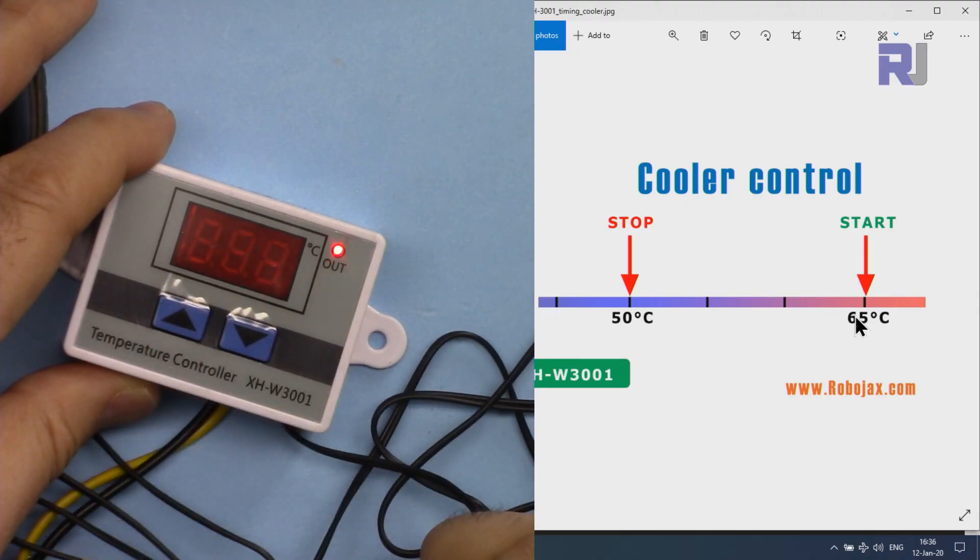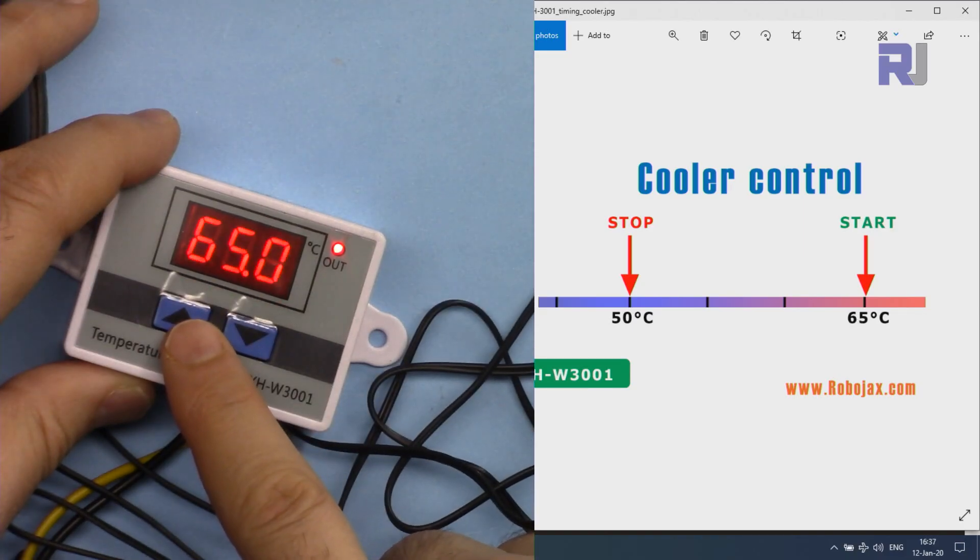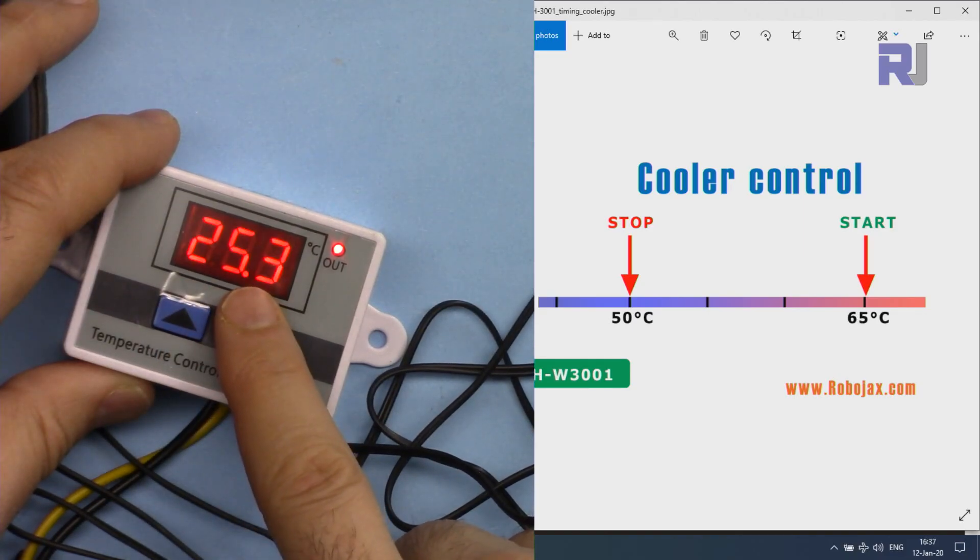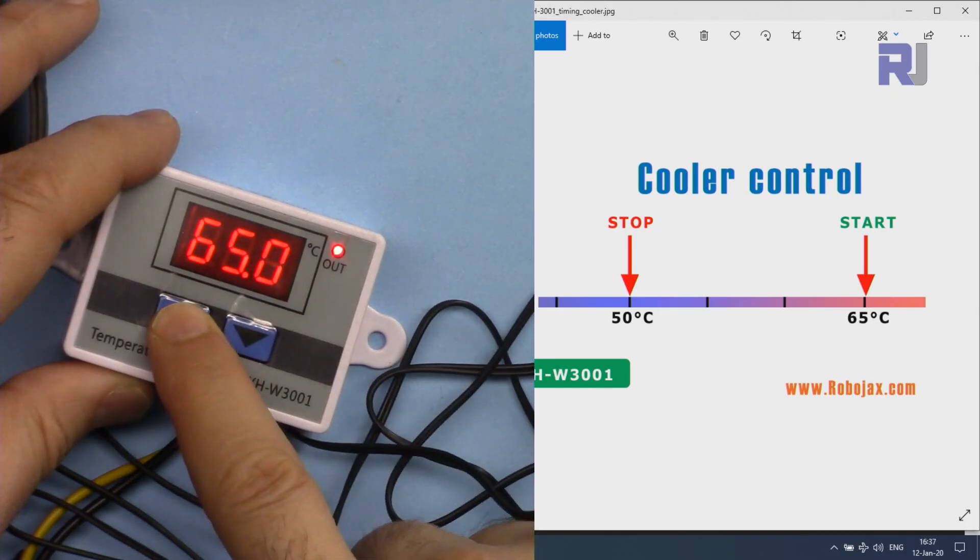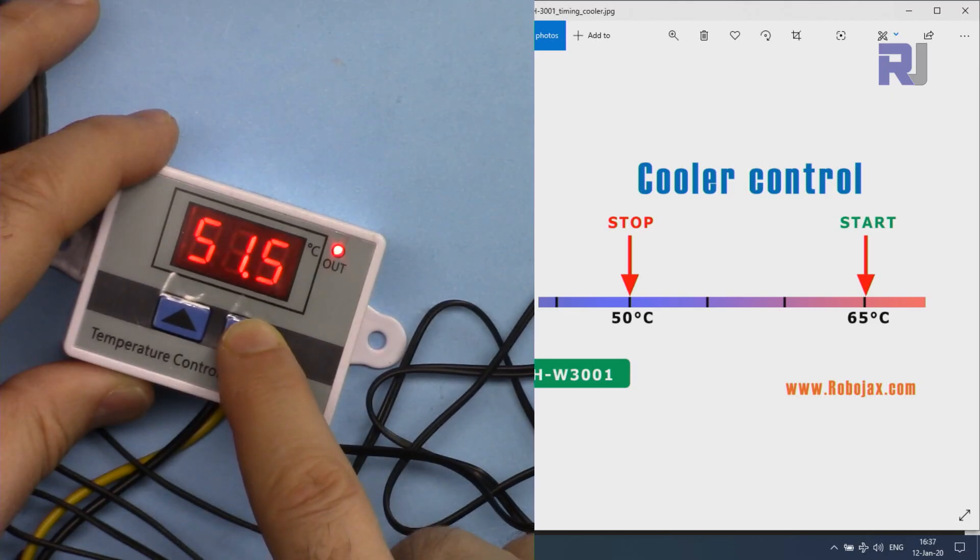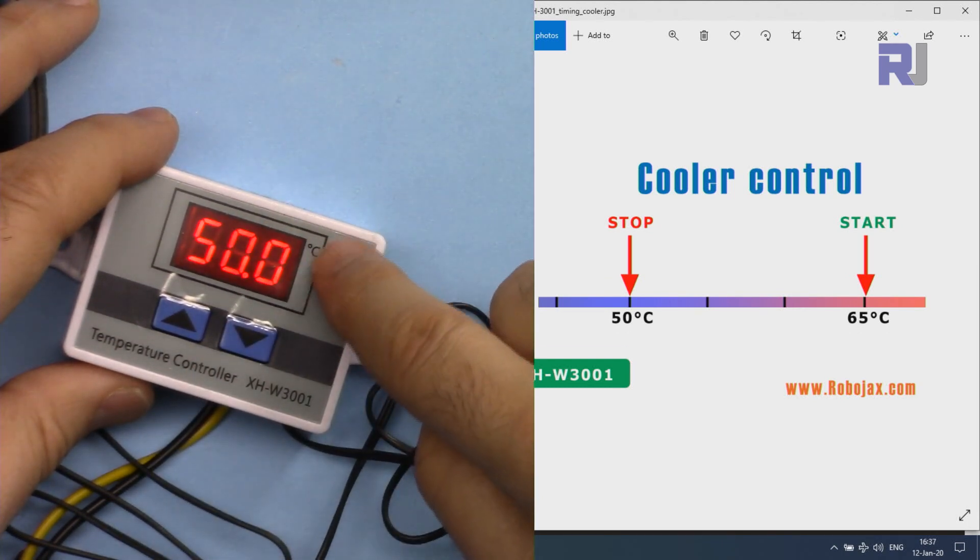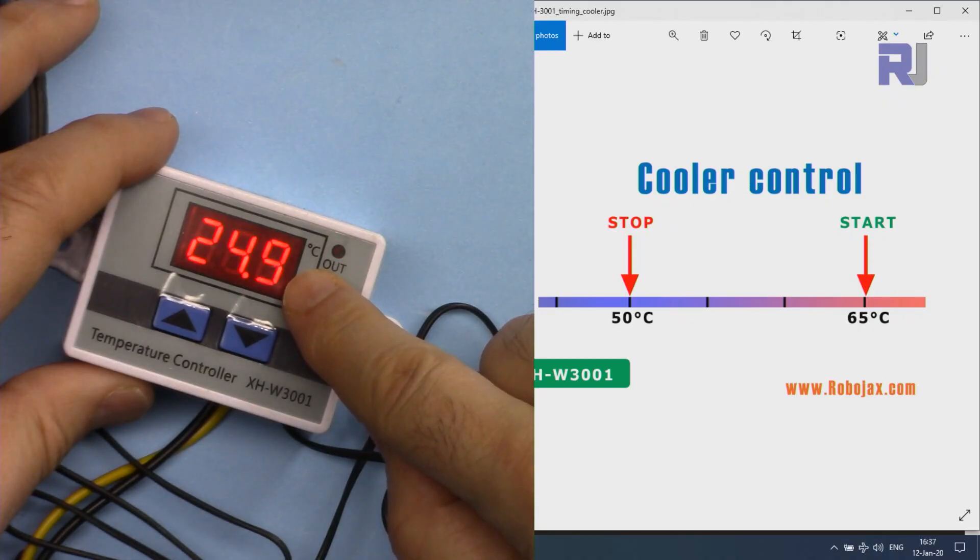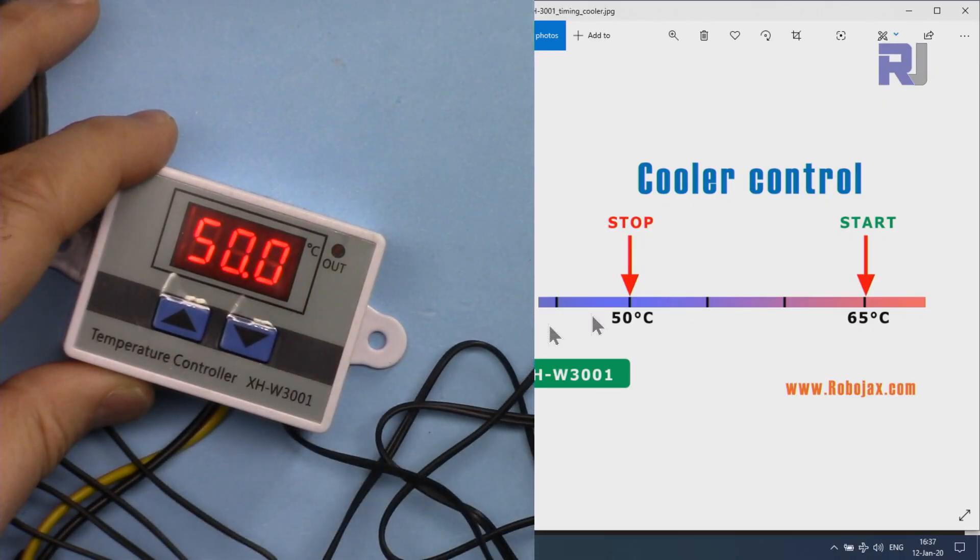So that is start 65. Now wait until it disappears, then press this - that's stop. So let's set it to 50.